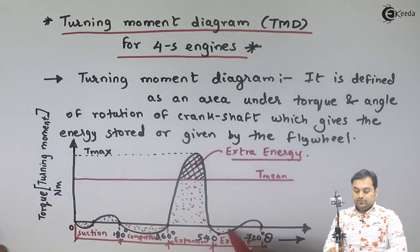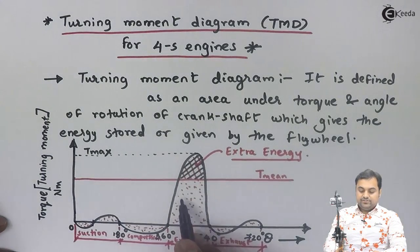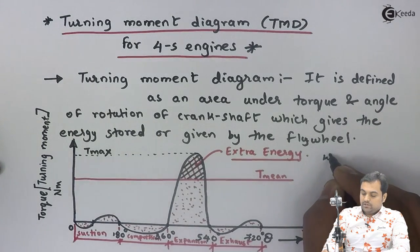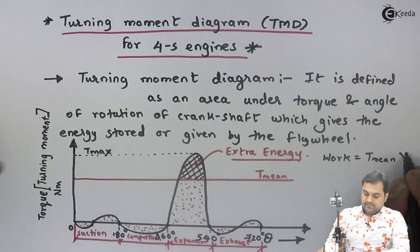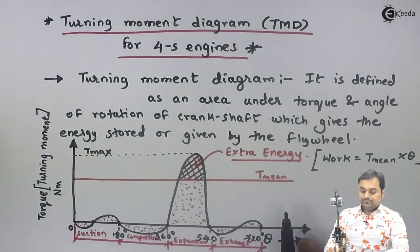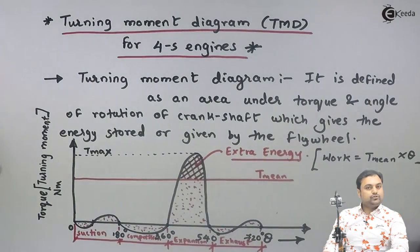The extra energy stored in the flywheel is then supplied back during the suction, compression, and exhaust strokes. The fluctuation of energy is thus balanced by the flywheel. The work or energy from the diagram is given by T_mean multiplied by theta — that is, the area under the turning moment diagram gives the energy stored in the flywheel. This completes the turning moment diagram for a four-stroke engine.